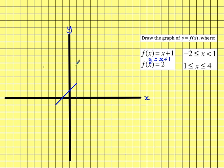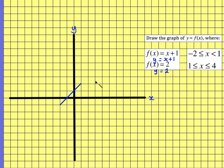The next part is that we've got f(x) equals 2. So the output, which is y, is going to be 2. And I'm going to draw this for values from 1 all the way along to 4. So the graph of y equals 2 is just a horizontal line going across.